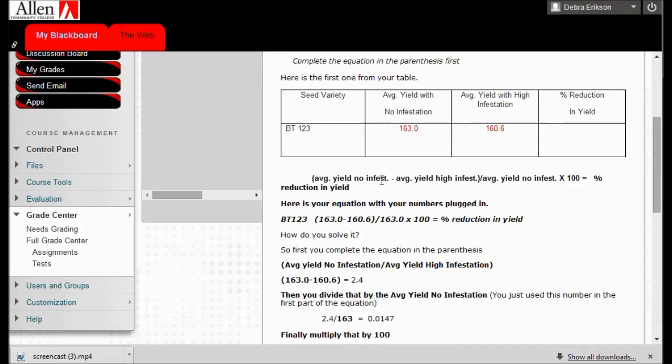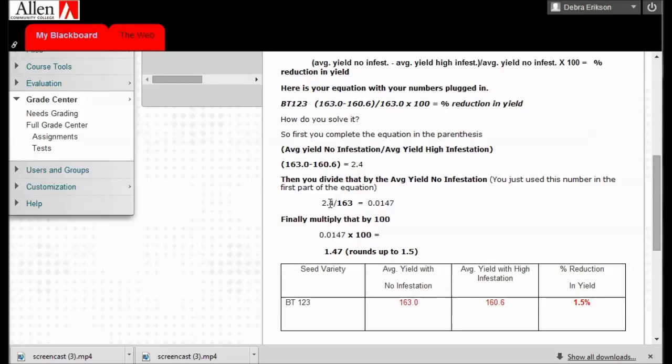So you do what's in the parentheses first. So 163 minus 160.6. We do that first. And that is 2.4. Then according to our equation, it's divided by that same number again. So you take that 2.4 and divide it by 163. If you look up here, we just did this part. That's 2.4 and we're dividing by the average yield no infestation. And that's what we got right here. And so it comes out to 0.014.